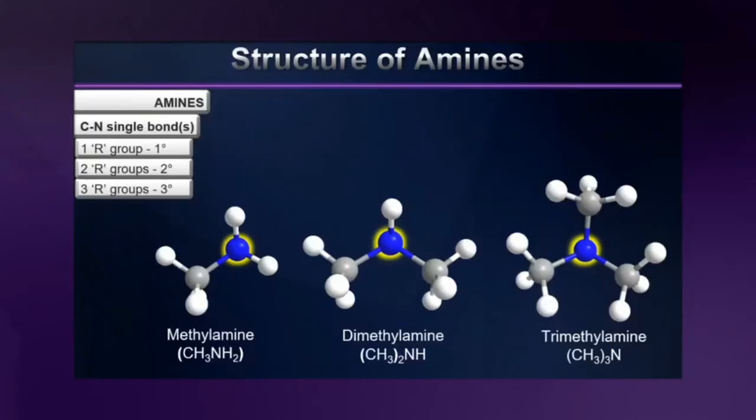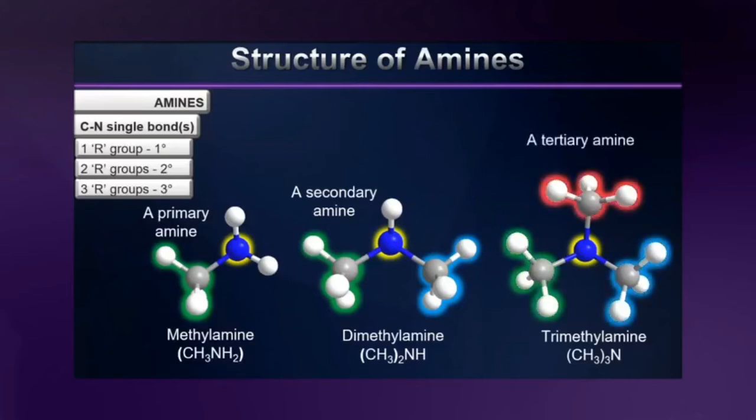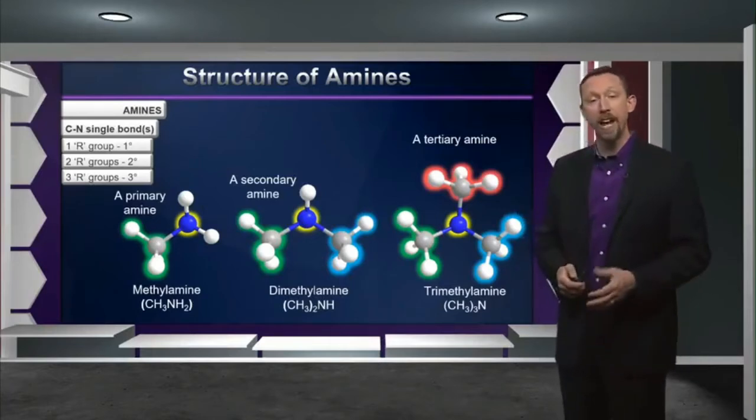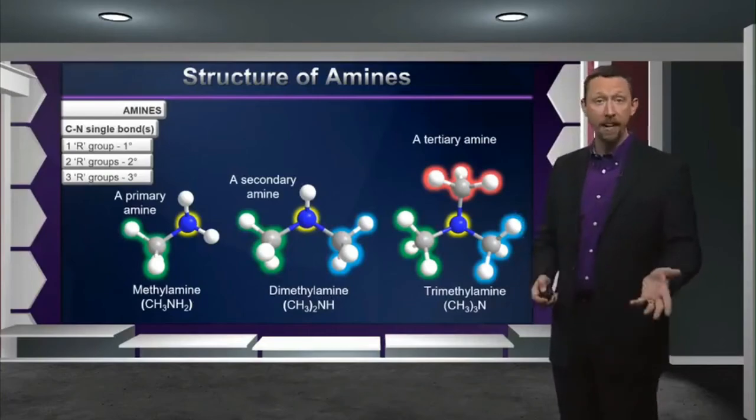Here are some simple examples. Methylamine has one R group and therefore would be considered primary. Whereas dimethylamine in the center here has two R groups and would be considered secondary. And trimethylamine, which has all three bonds to the nitrogen as R groups and none of them as hydrogens, would be called a tertiary amine. And the number of bonded groups to the nitrogen can have a profound effect on how these compounds behave, both physically and chemically.